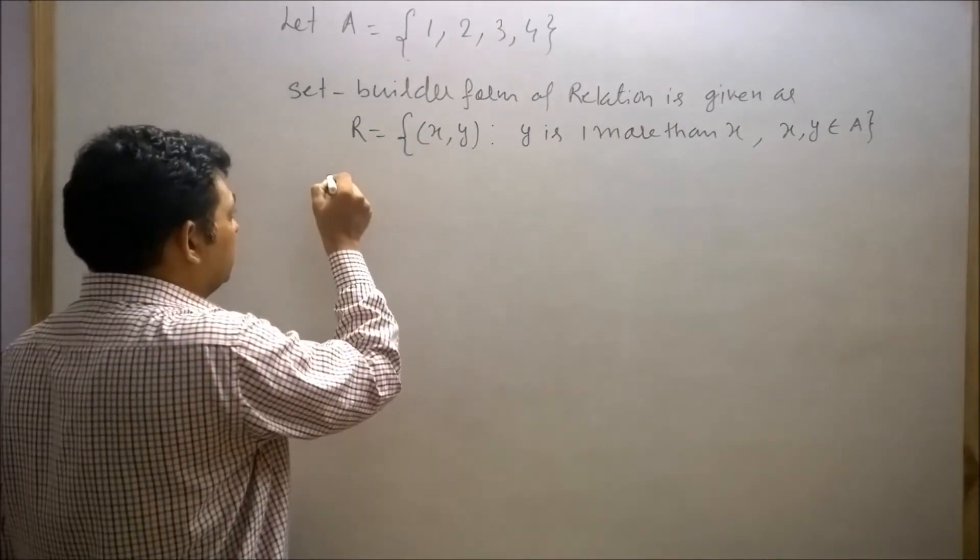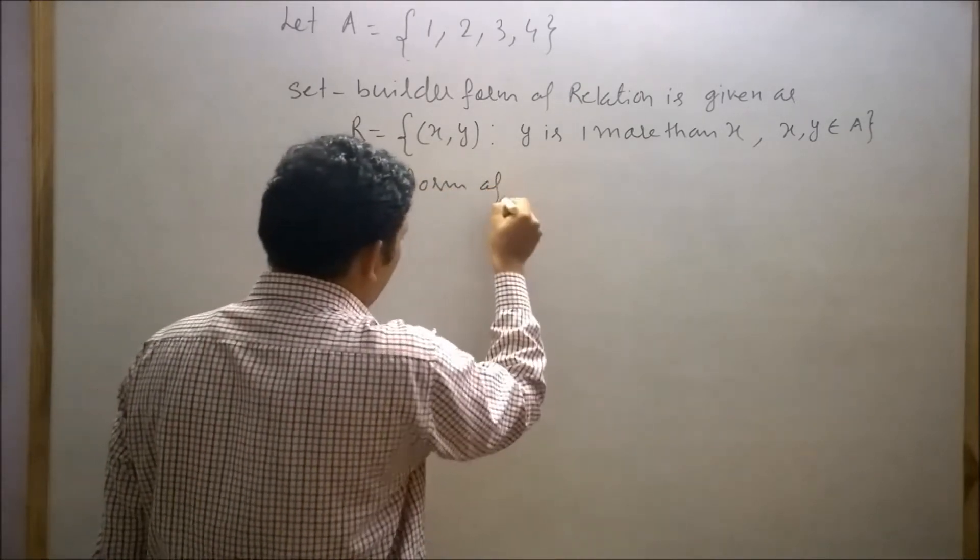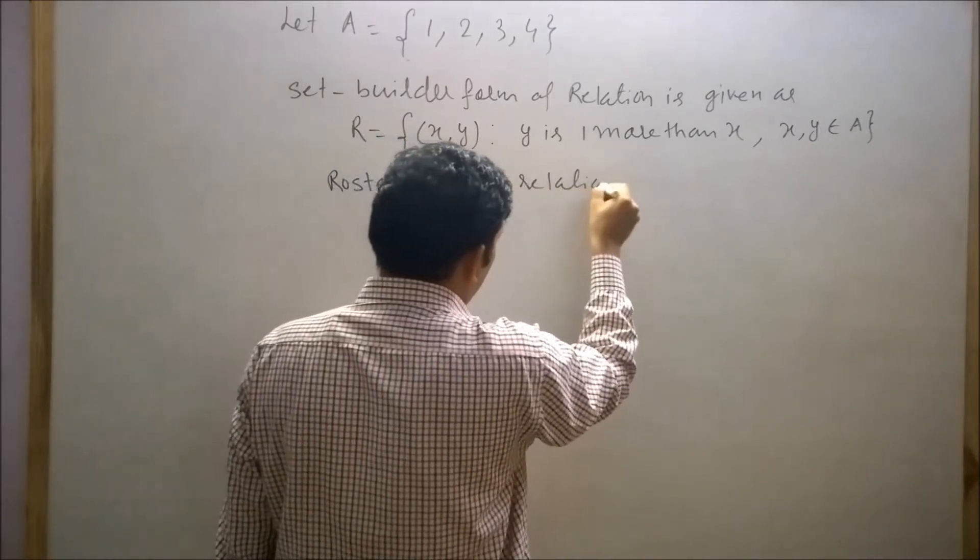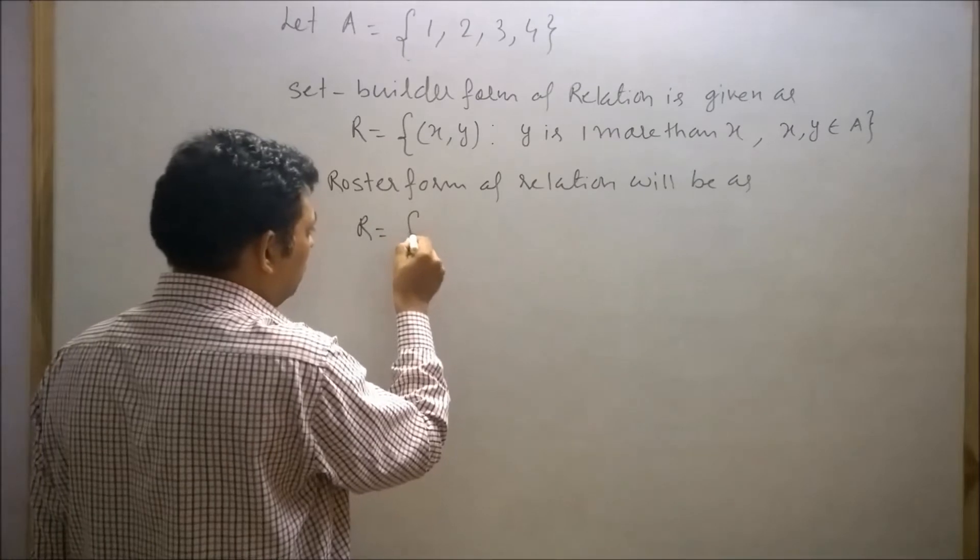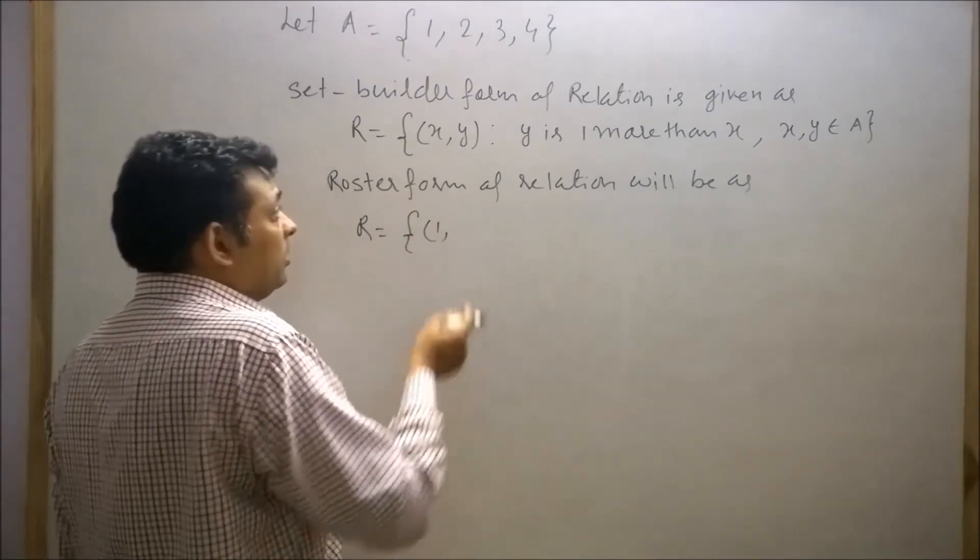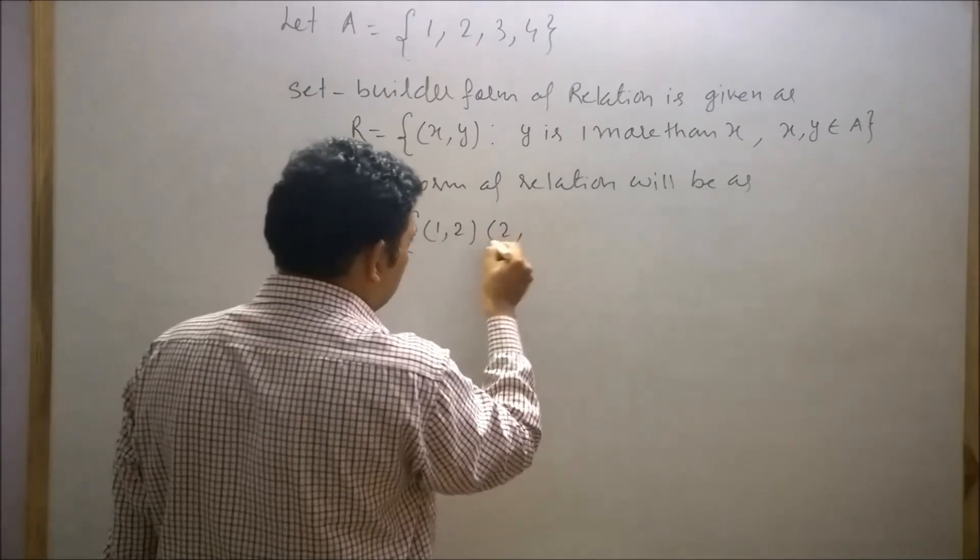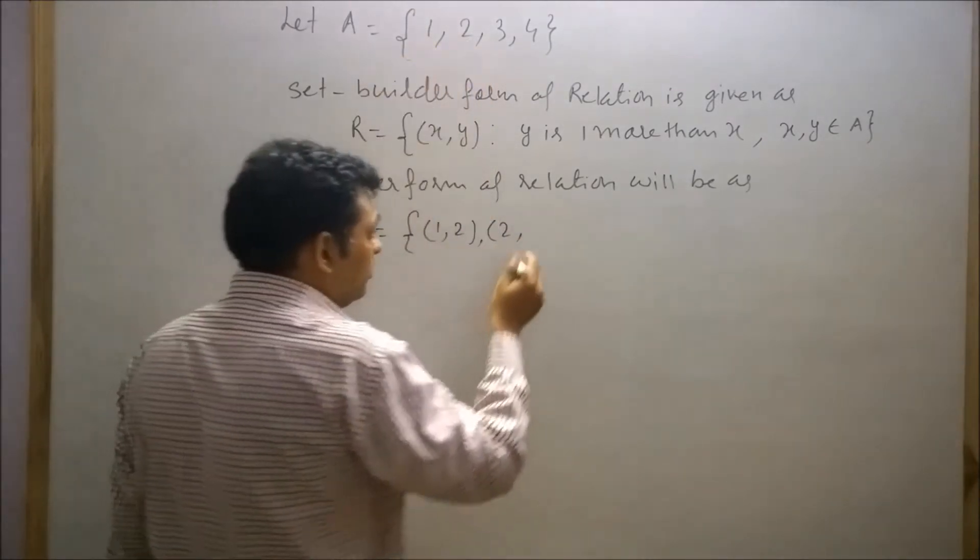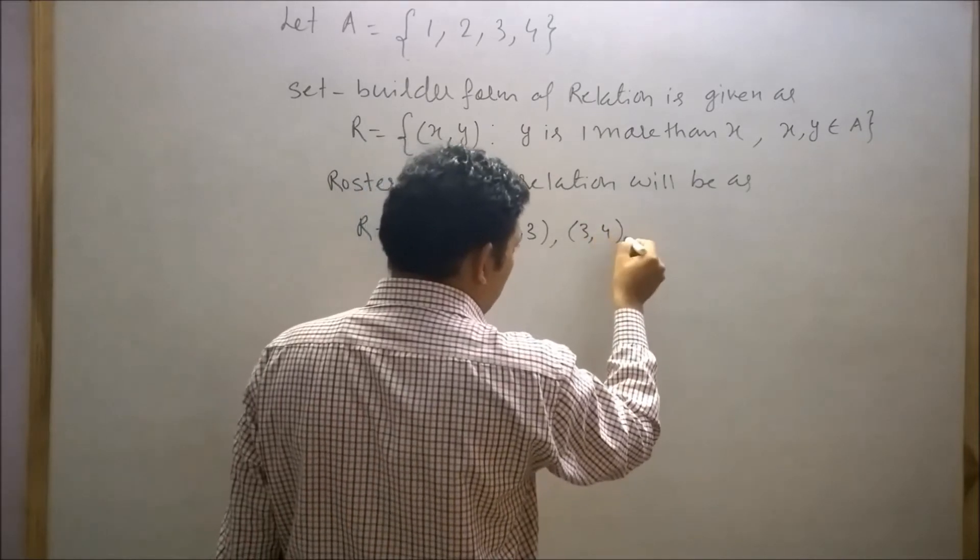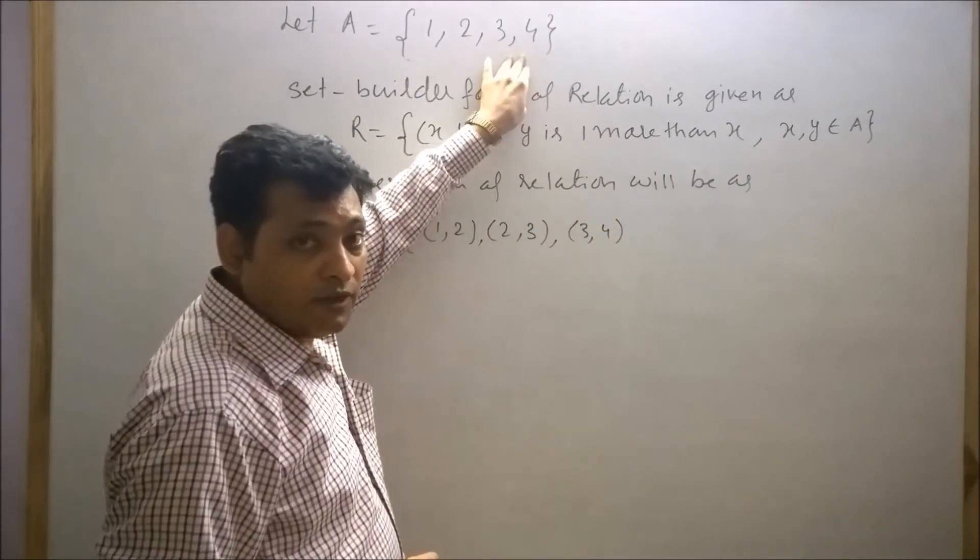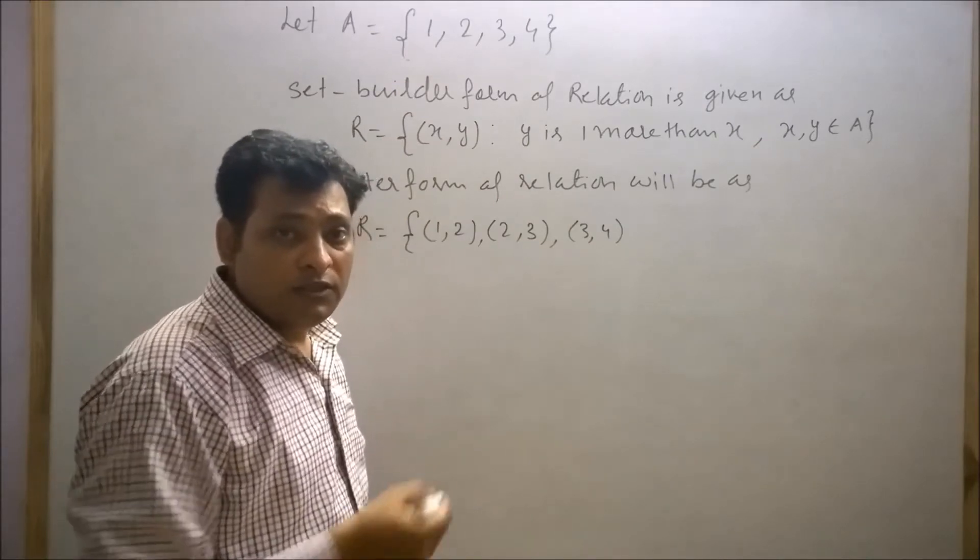Then its roster form of relation will be R equals: when x equals 1, y is 1 more than x, so y will be 2. If x equals 2, then y will be 3. When x equals 3, then y will be 4. If x equals 4, then y will be 5, but 5 does not belong to set A, so the ordered pair (4, 5) does not belong to relation R.